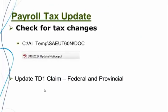Checking for changes in the tax update document: normally when I install the tax update, I add C colon in front of the AI underscore temp folder during the install, so that my documents will be located in the C underscore AI temp folder. The file name is usually UT or CT for Canadian tax, followed by the date and then the words 'update notice'. Look for that document.